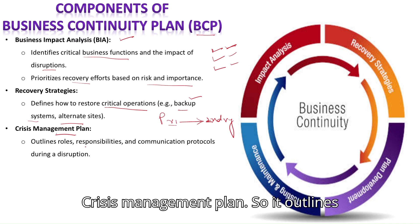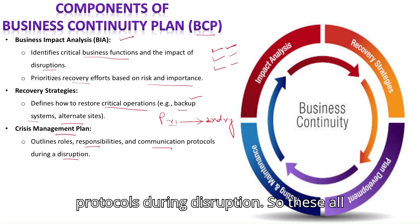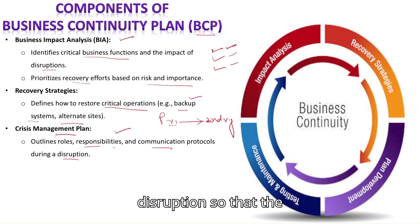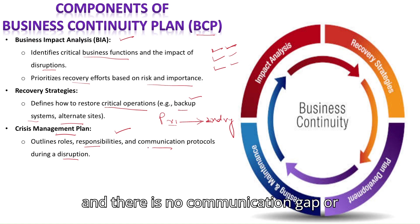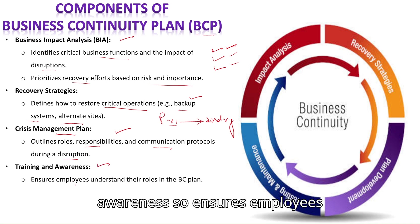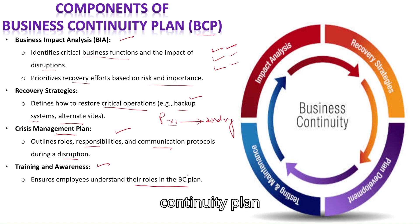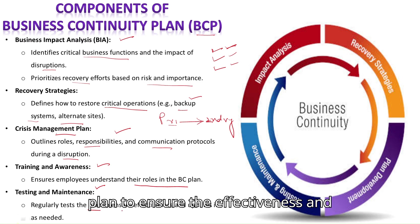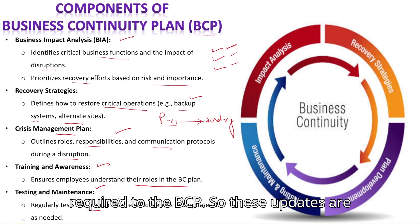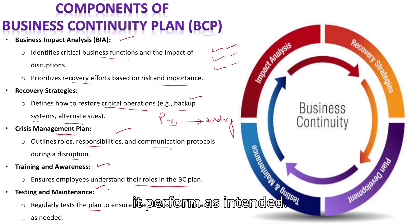The Crisis Management Plan outlines roles, responsibilities, and communication protocols during a disruption. These are all worked out before the disruption so that business continuity operations occur smoothly — everyone knows their responsibilities and communication methods are already defined. Training and Awareness ensures employees understand their roles in the Business Continuity Plan. Testing and Maintenance is also important: once the BCP is made, it should be regularly tested to ensure effectiveness and updated as needed, since updates may be required over time.